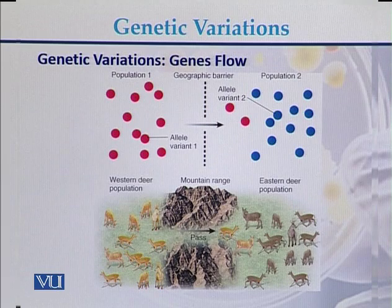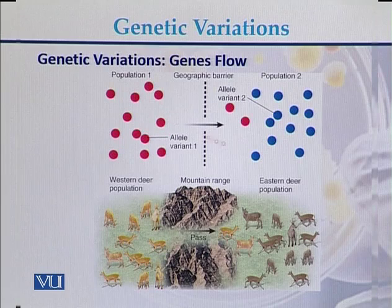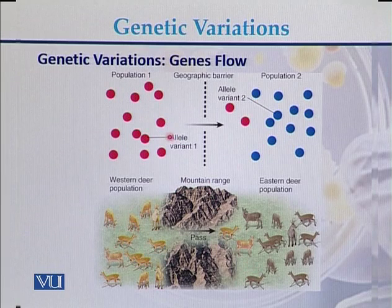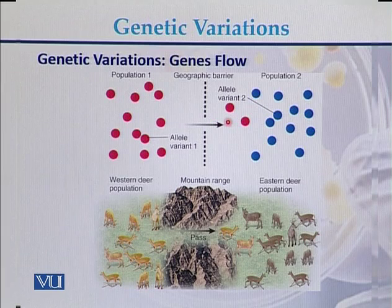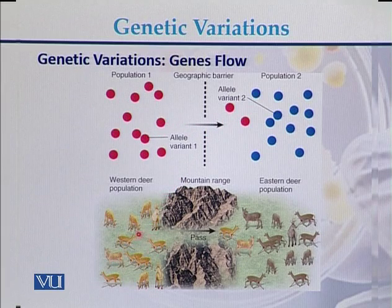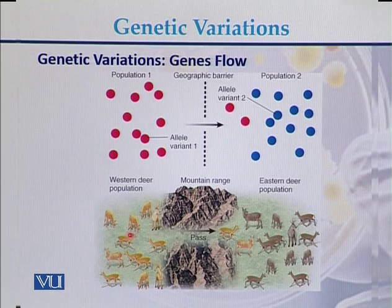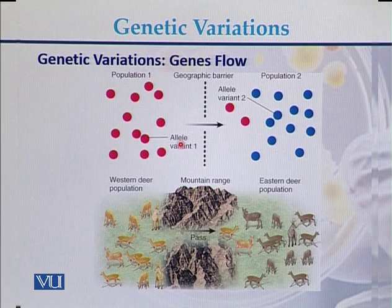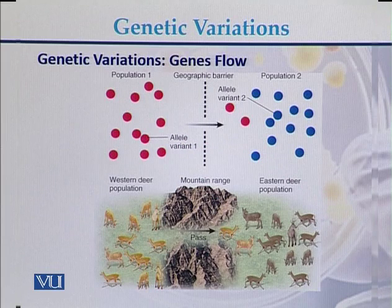Another reason for genetic variations can be gene flow. Here we have population number one and population number two shown in the form of animals. Sometimes certain alleles move from one population to another. Here two allele variants move from one population to another, and two animals move from one area to another. This movement of alleles between populations, called gene flow, is responsible for genetic variations.